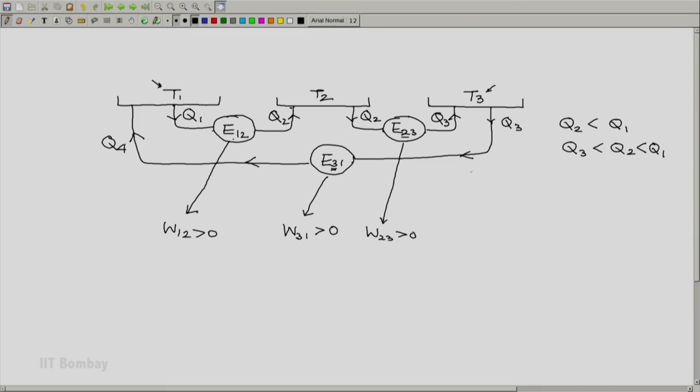Then E31 has an output W31, which is also positive. So you must have q4 less than q3. So we must have q4, which is less than q3. And since q3 is less than q2 less than q1, finally we should have q4 less than q1, giving you q1 minus q4 to be a positive number.